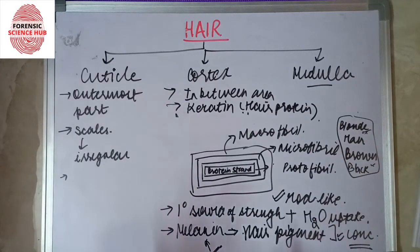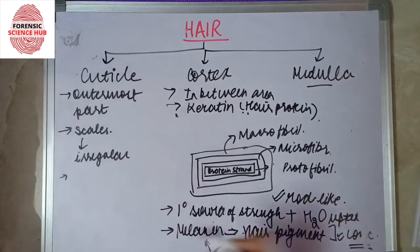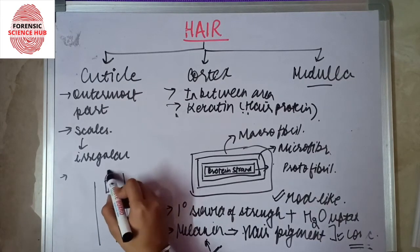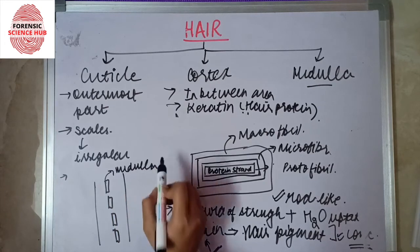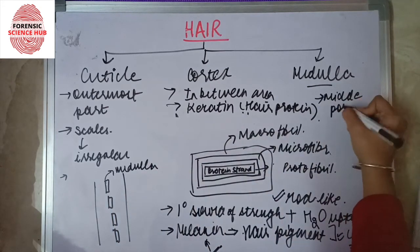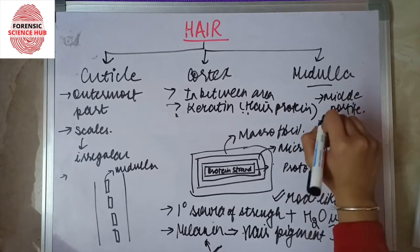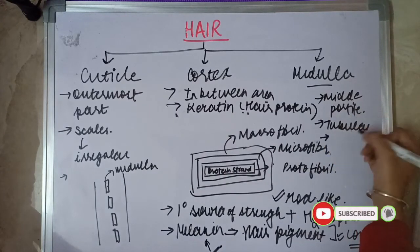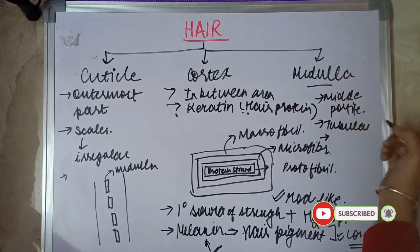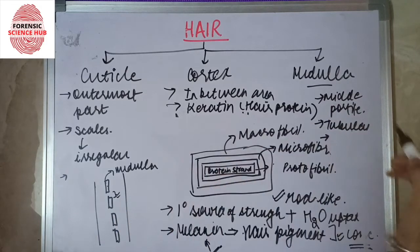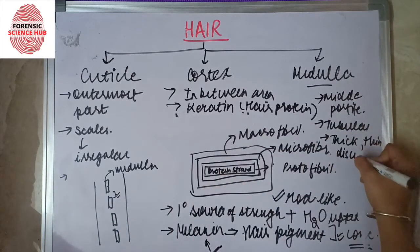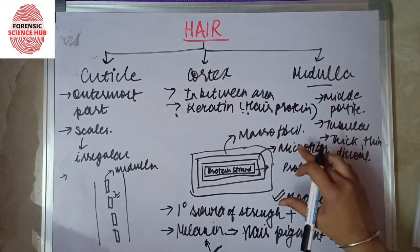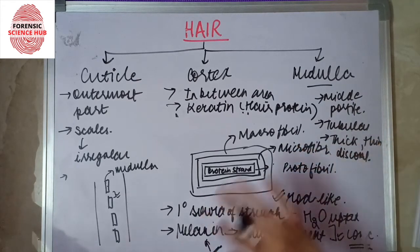The last layer is the medulla. As seen in the diagram, the medulla is the middle portion of the hair. It is tubular and runs along the center. It can be thick, thin, discontinuous, fragmented, solid, continuous, interrupted, or even absent in certain cases.